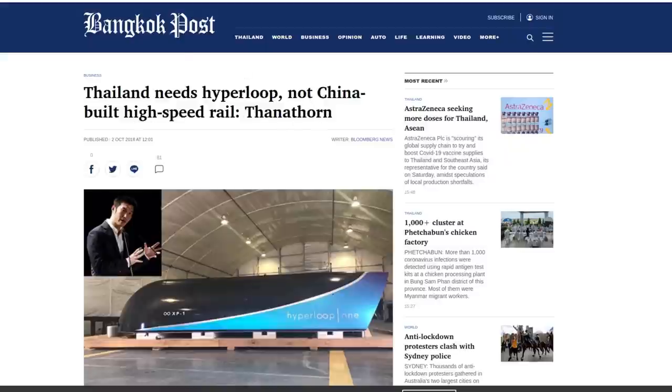Thanathorn. This is published in the Bangkok Post, but it's originally from Bloomberg News. This is October 2018. And this is Thanathorn. He's the billionaire leader of the opposition here in Thailand. And before the 2019 general election, he was in the United States lobbying for political support, which should tell you everything you need to know about why he would say something like this.